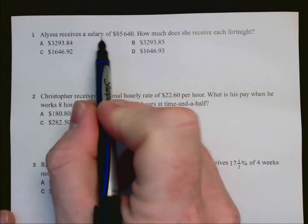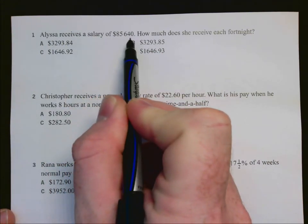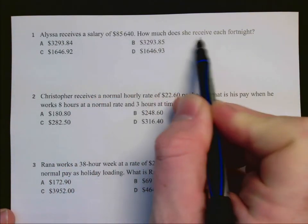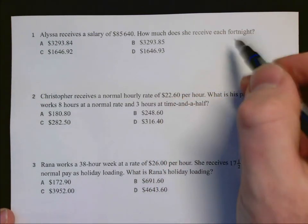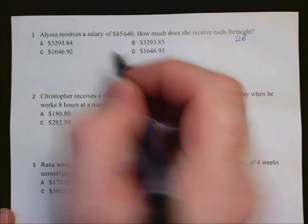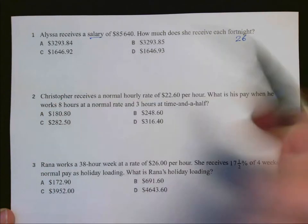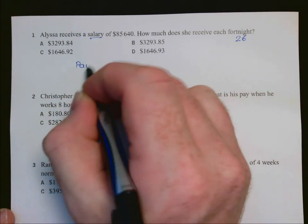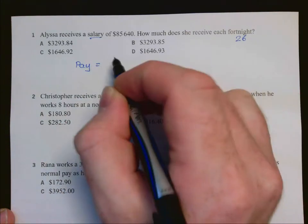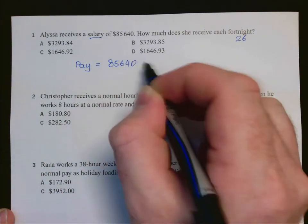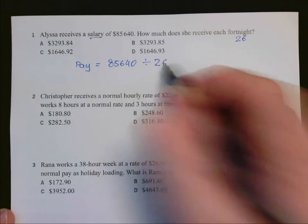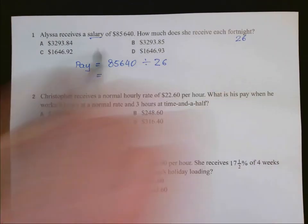Question 1. Alyssa receives a salary of $85,640. We're going to calculate how much she receives each fortnight. There are 26 fortnights in a year and a salary is a yearly income. So to find out how much she is paid per fortnight, we're going to take the total salary and divide that by 26 to find for each fortnight.